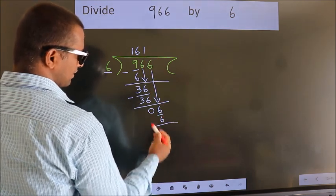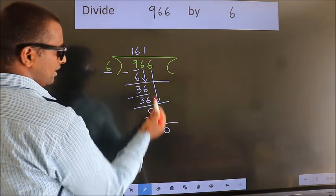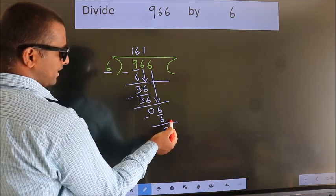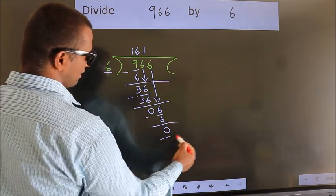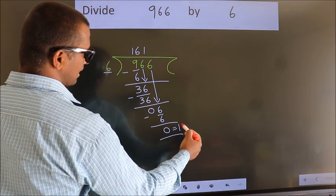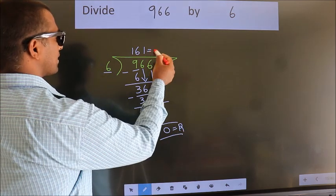Now, we subtract. We get 0. No more numbers to bring down. So, we stop here. This is our remainder. This is our quotient.